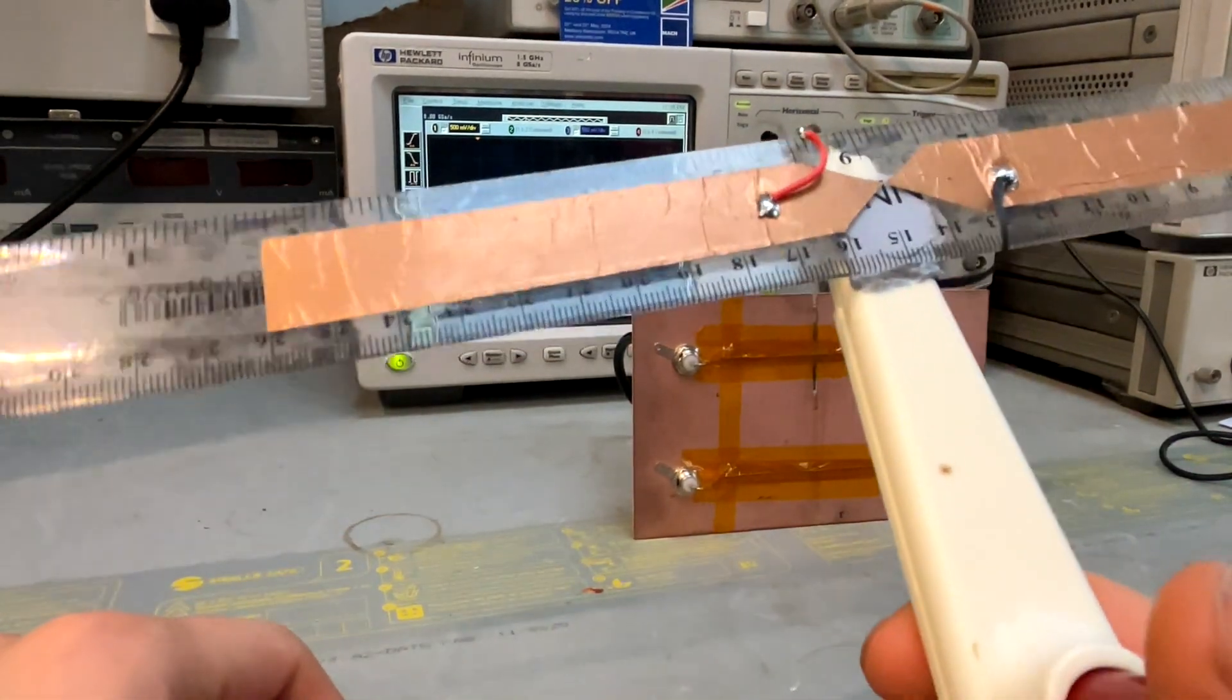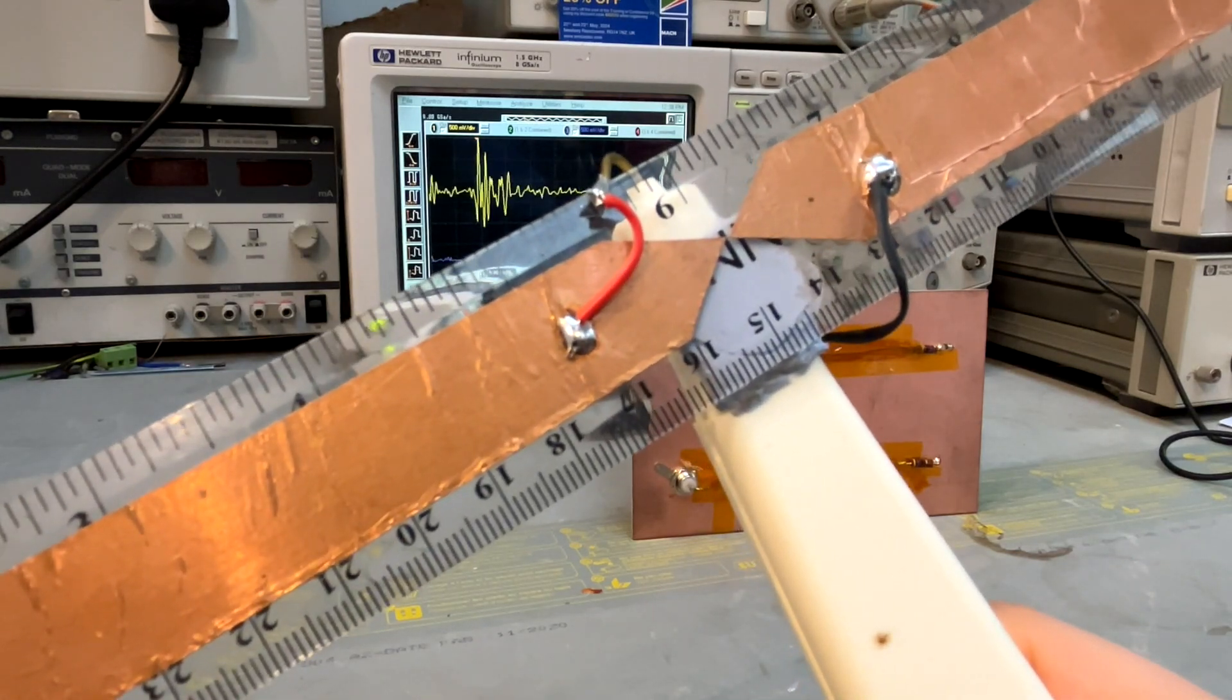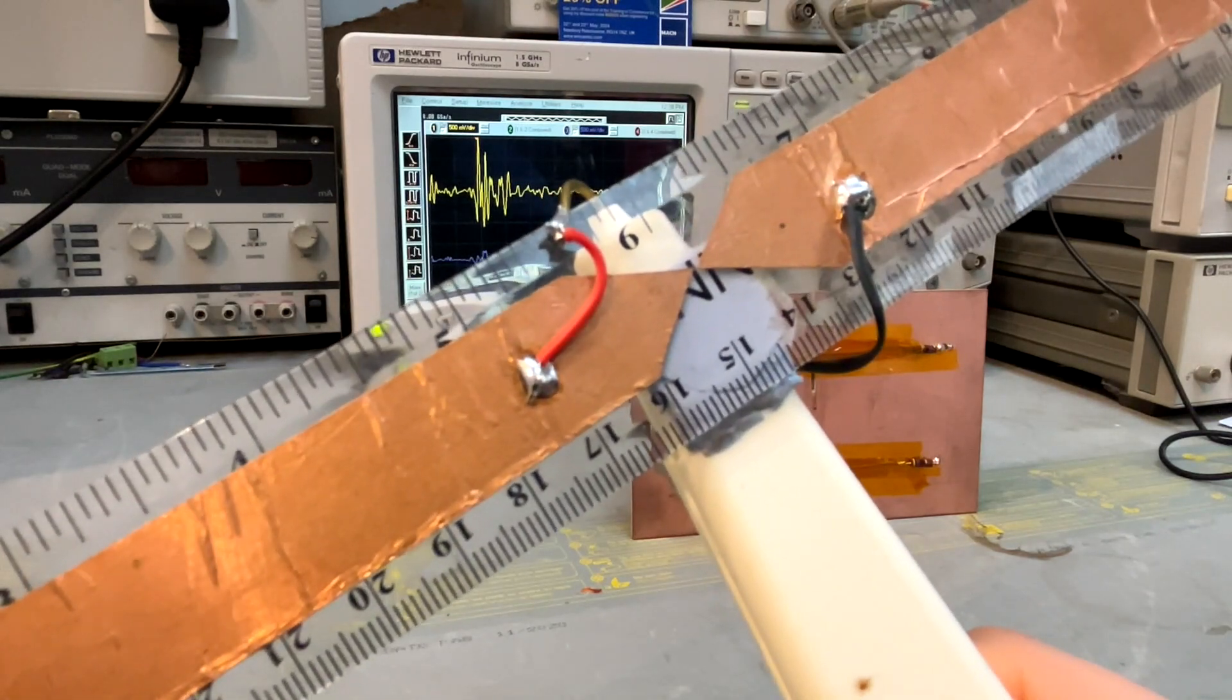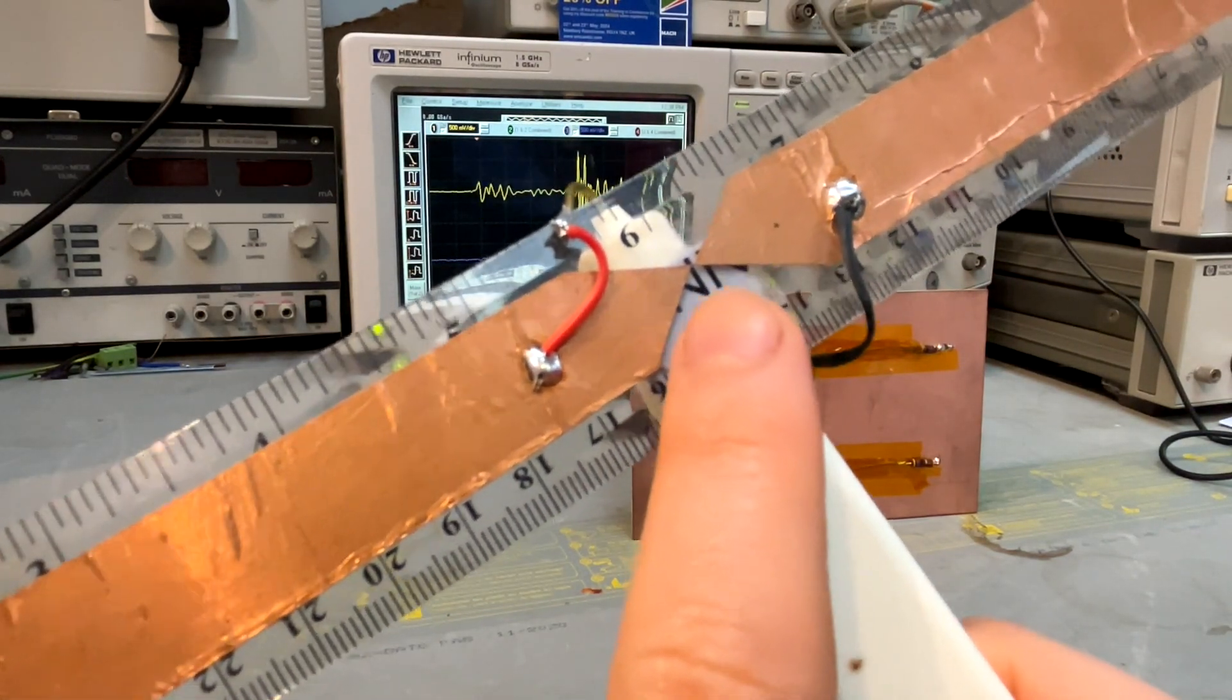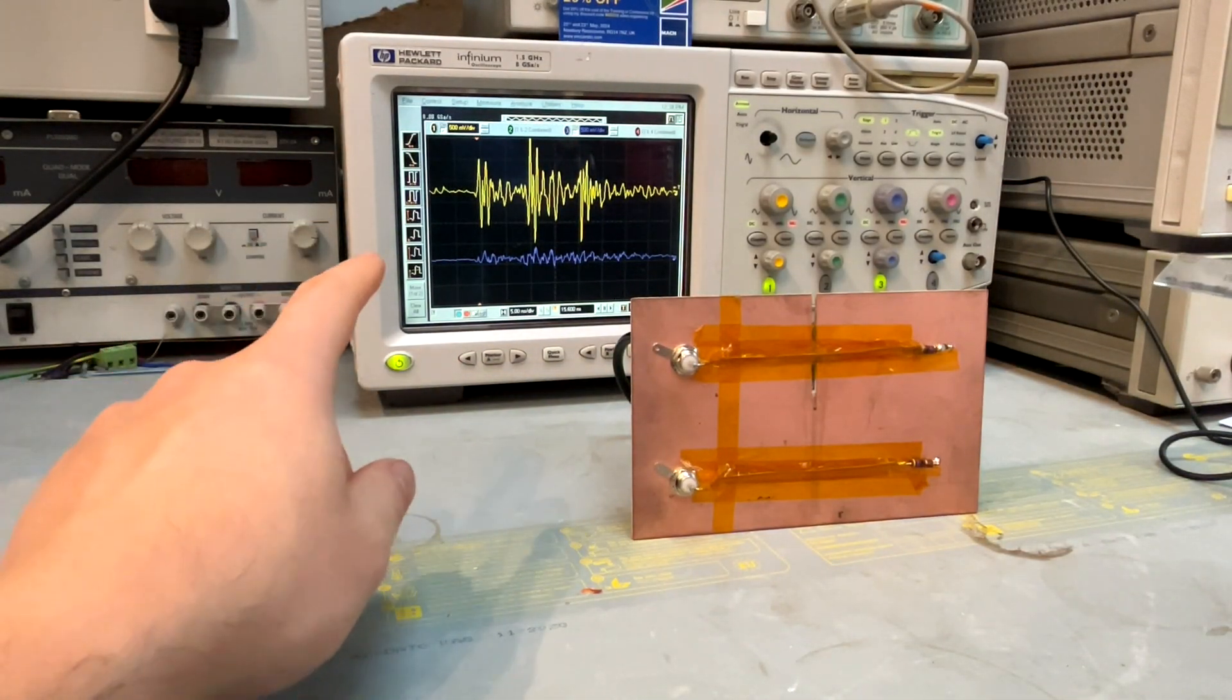So if I press it, you can really see the sparks here. And you can already see the noise on the oscilloscope. See that spark? And now I just move it, you can see it clearly.